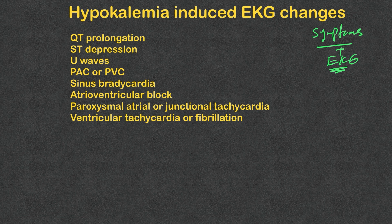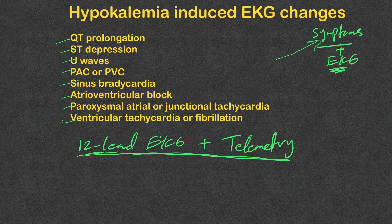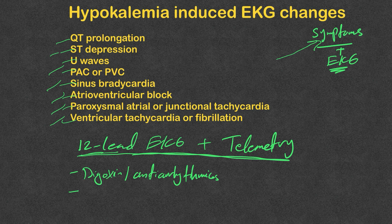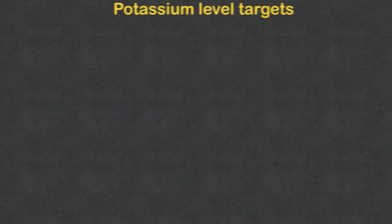That's why it's very important that any hypokalemia patient should get a 12-lead EKG and should be placed on telemetry. There are a subset of patients who have the highest risk to develop such arrhythmias: patients on digoxin or any other anti-arrhythmic drugs, patients who are already on medication that can prolong QT interval, patients with coronary artery disease, congestive heart failure and other structural heart disease, and of course patients with history of previous arrhythmias.